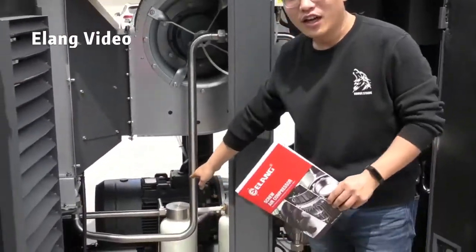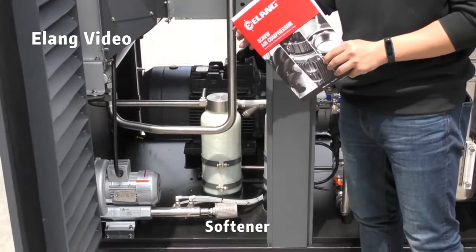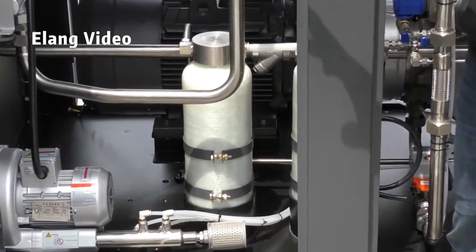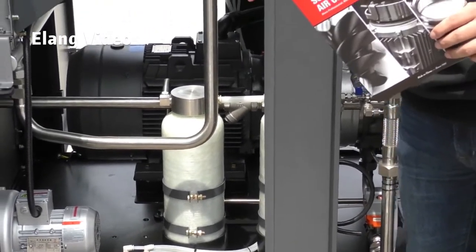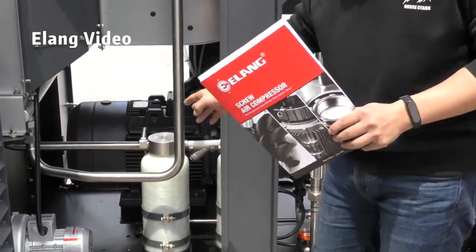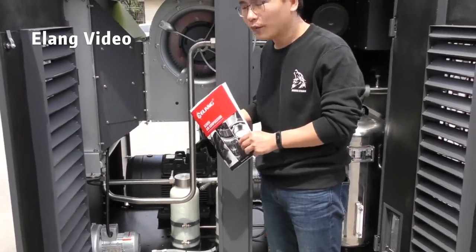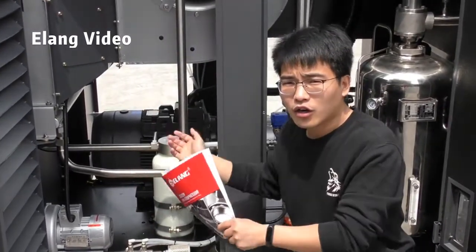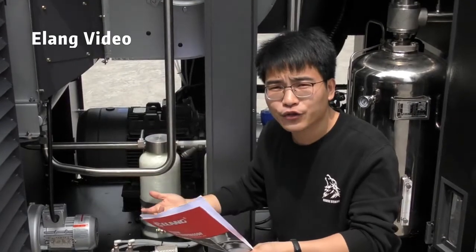This one is a very important part for the oil-free air compressor. Because our oil-free air compressor is water injection, we need soft and clean water for the air compressor. This part is to ensure our air compressor system will have enough clean, soft water to give more clean air.